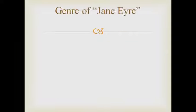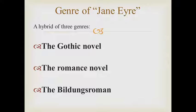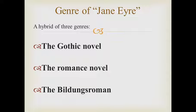The genre of Jane Eyre is complex and controversial because it is a hybrid of three genres: the Gothic novel, which foregrounds the mysterious, supernatural, horrific, and romantic; the romance novel, which emphasizes love and passion and the notion of lovers destined for each other; and the Bildungsroman, which narrates a character's internal development through a succession of encounters with the external world. That is why we cannot call it simply a Gothic novel or simply a romance — it is a hybrid of all three.